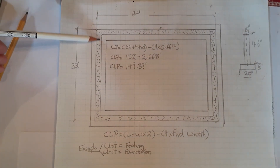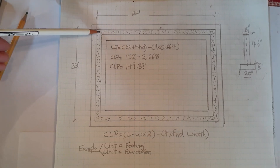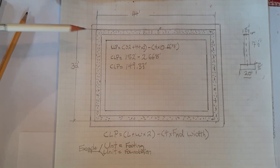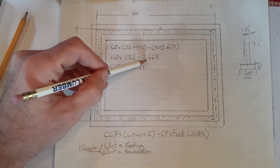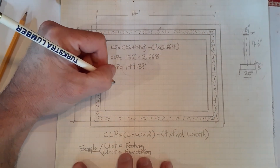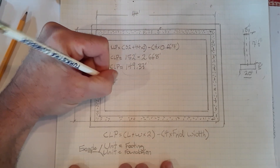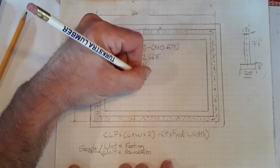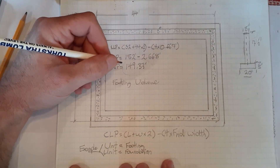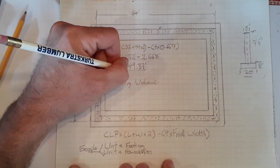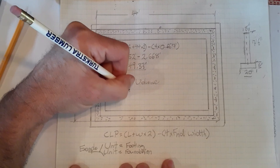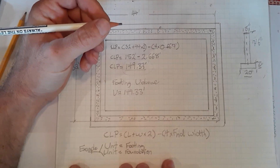That is the centerline perimeter of the foundation wall, and that is the centerline perimeter of the footings as well. So we managed to handle two units in one calculation. Now that we have 149.333, we can simply do a volume calculation. Let's crack off the footings first, so footing volume is going to be a standard length times width times height calculation. Our length is now our centerline perimeter: 149.33 feet.